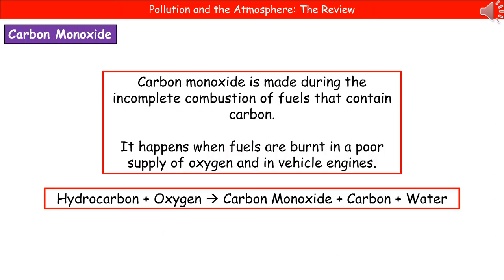The first pollutant we're going to look at is carbon monoxide. Carbon monoxide is made during the incomplete combustion of fuels that contain carbon. This is going to happen when fuels are either burnt in a poor supply of oxygen or, more commonly, in vehicle engines. As we've already looked at in organic chemistry, a hydrocarbon plus oxygen in a limited supply will make carbon monoxide, carbon, and water.